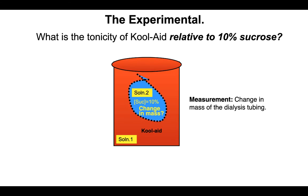Now comes the experimental. You're going to have dialysis tubing filled with 10% sucrose solution and put it into Kool-Aid. We know that Kool-Aid is made with sucrose, but we don't know how much. The only way to figure out the tonicity of Kool-Aid relative to what's inside the bag is to determine the net flow of water. Did water go into the bag, leave the bag, or was there no change in mass? That change in mass will give you the answer: what is the tonicity of Kool-Aid relative to a 10% sucrose solution?